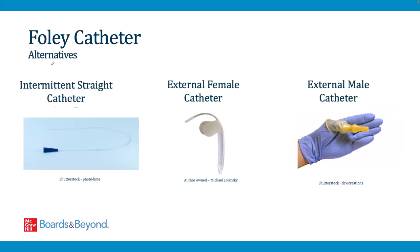There are alternative ways to manage urine without a Foley. In patients retaining urine, intermittent straight catheterization can be used — a catheter is placed to drain the bladder several times during the day and removed each time, dramatically reducing infection risk. For incontinent patients, an external female catheter (a sponge placed outside the urethra hooked up to suction) or an external male catheter (a condom-like device) can reduce patient discomfort, nursing burden, and risk of urinary infection.